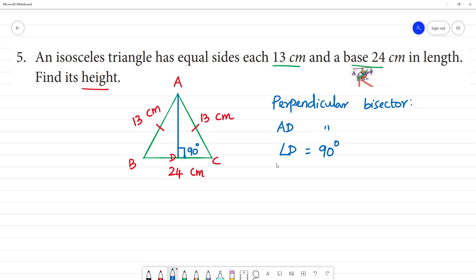Perpendicular bisector means BD will be equal to DC.